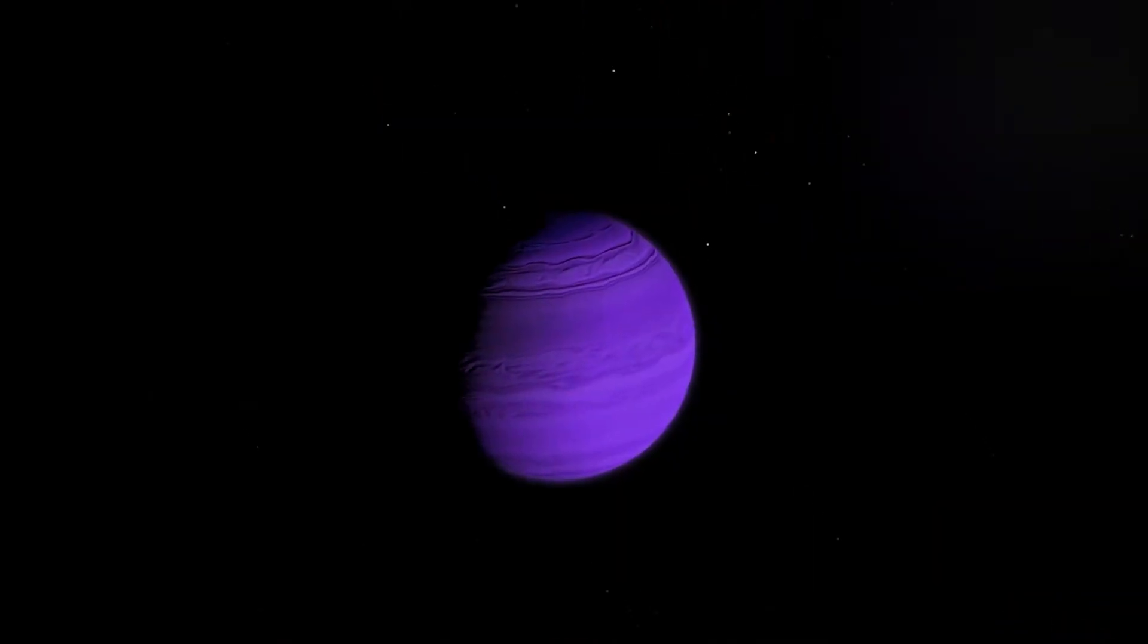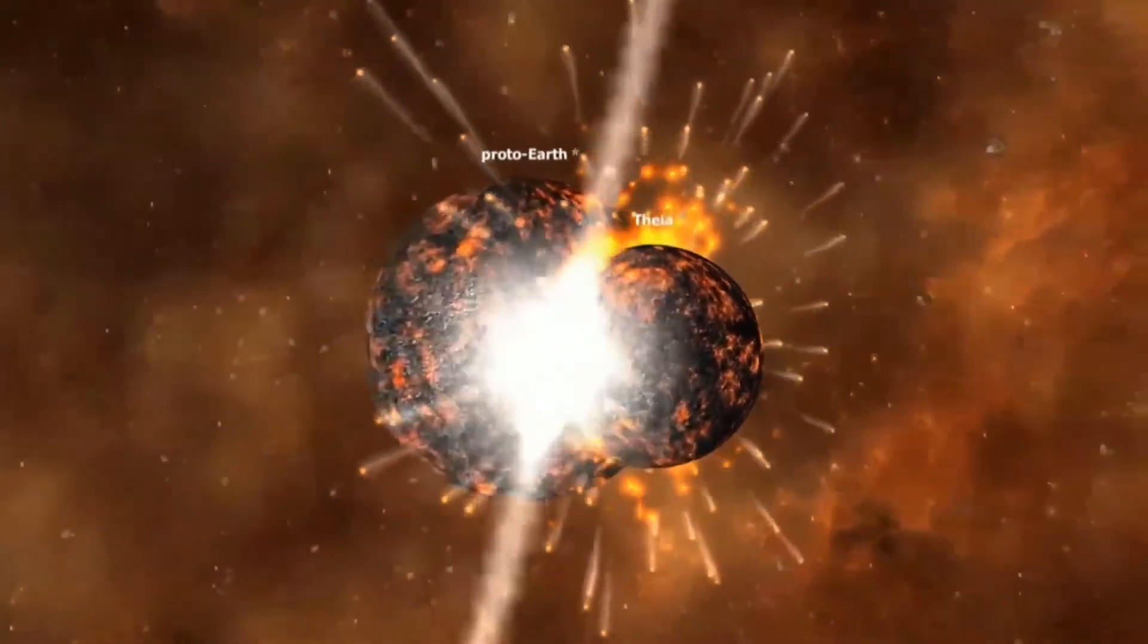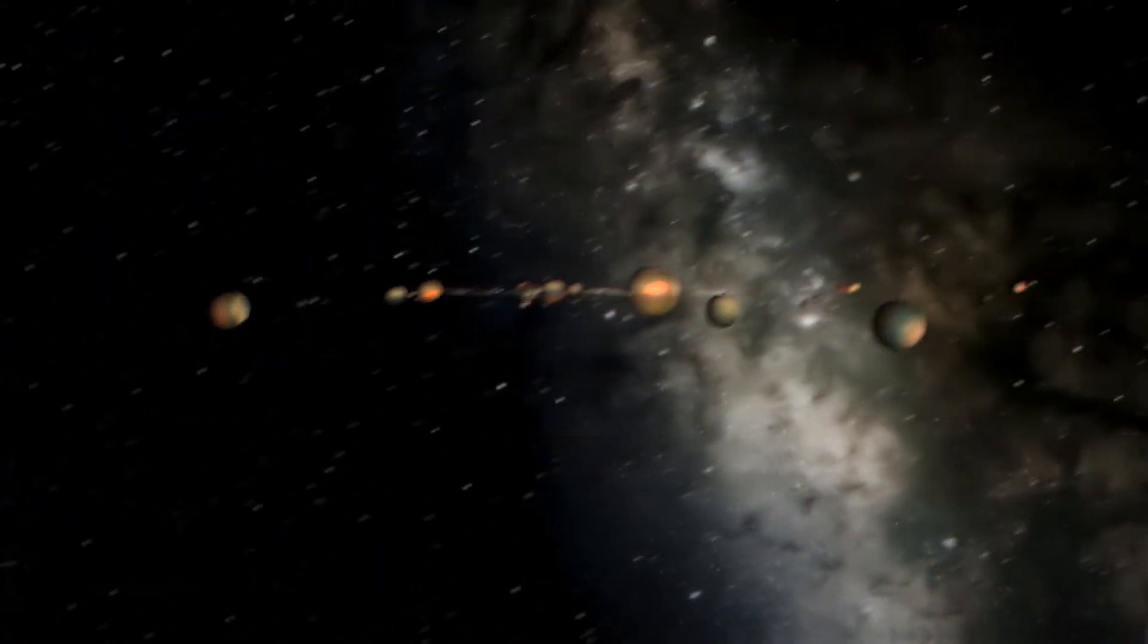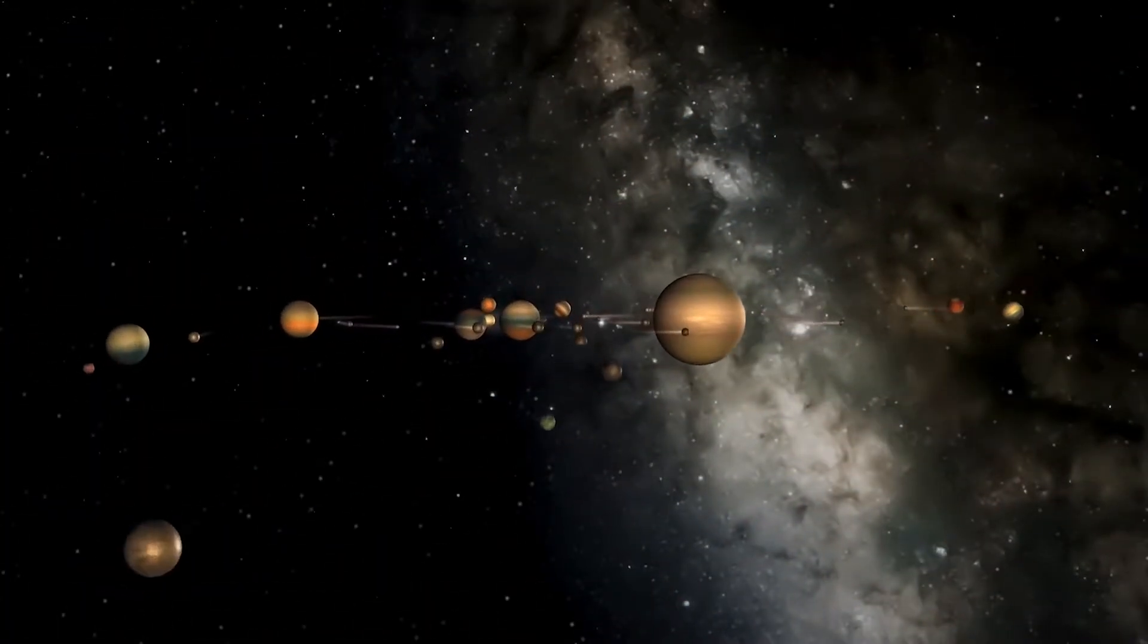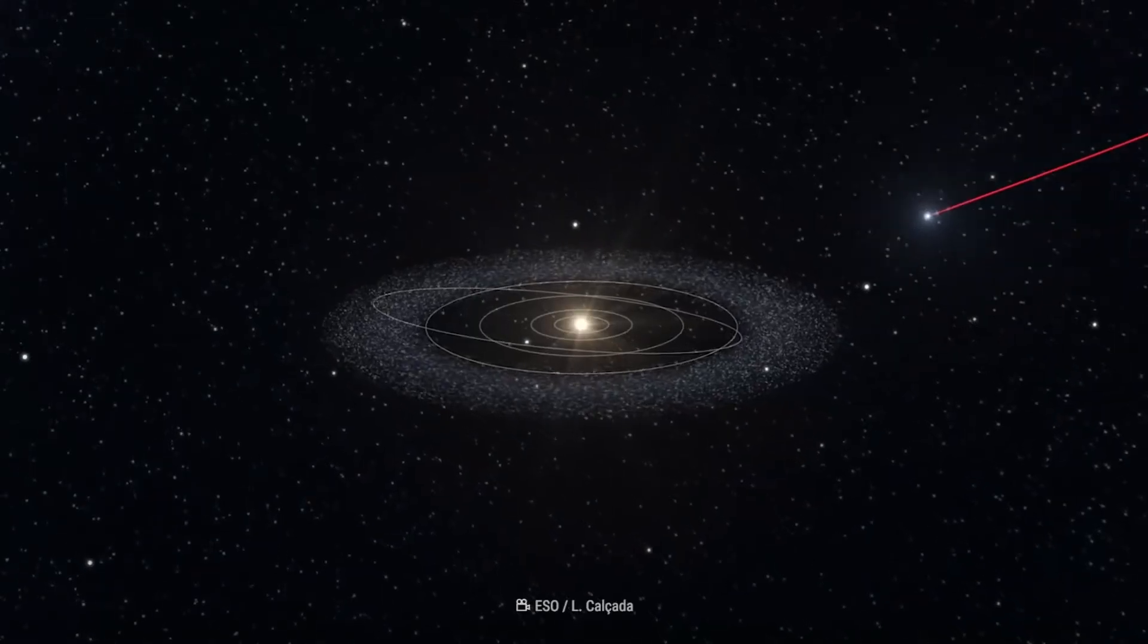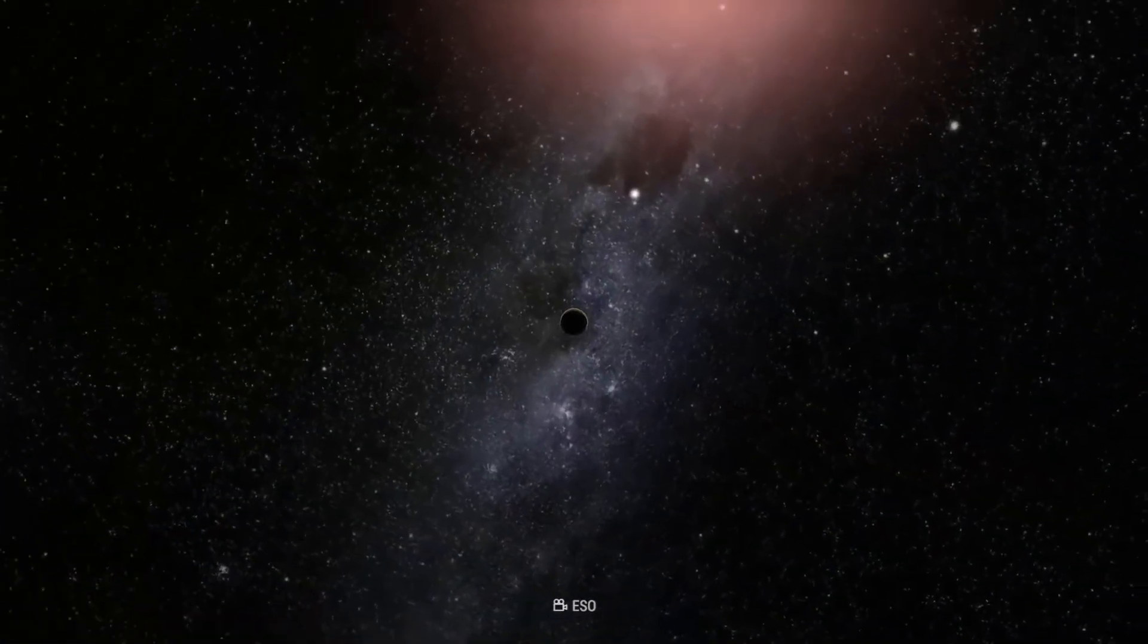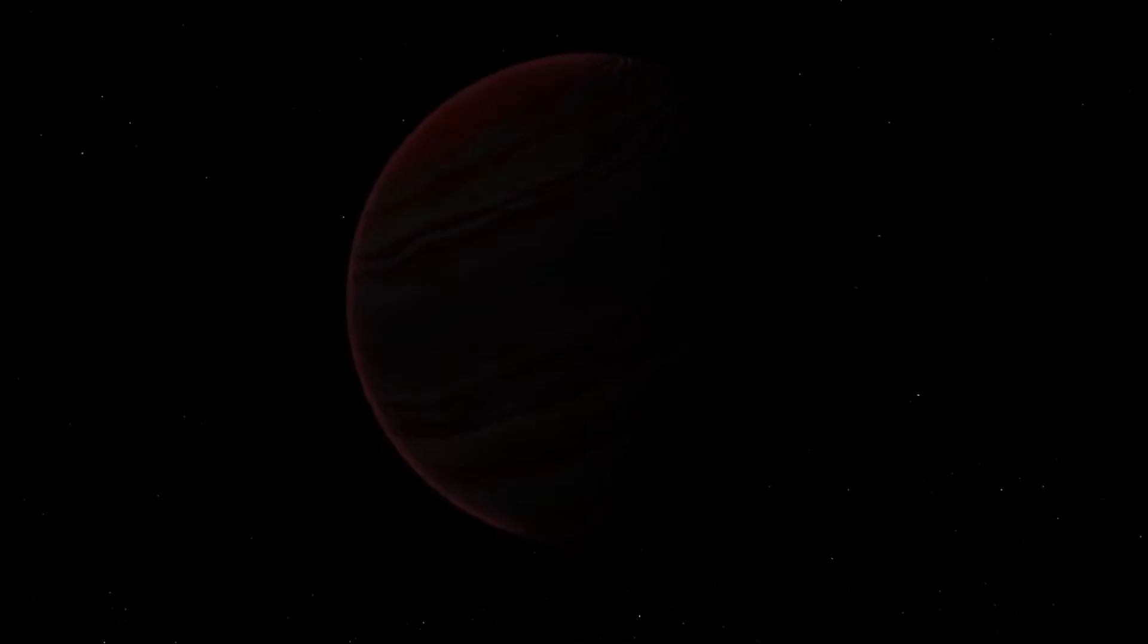No one knows what caused these planets to eject, but some theories posited included asteroid impacts with enough force to dislodge them from orbit. Another theory as to how rogue planets come about is that after their birth orbiting a star, another celestial body like a star comes close enough that its gravity pulls the planet out of its orbit and into space. Regardless of how they became rogue, once they are on their own, they will drift through the cold vacuum of space.